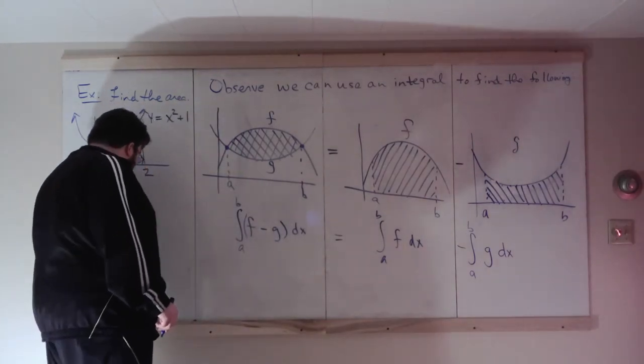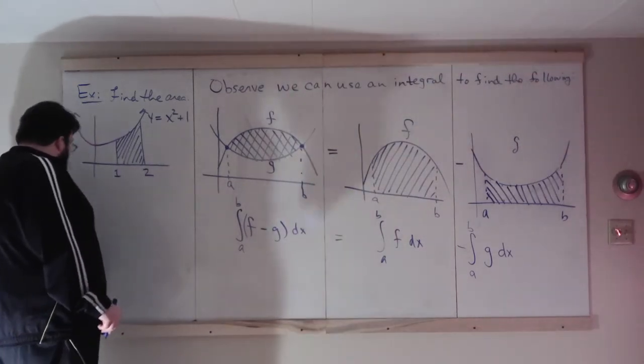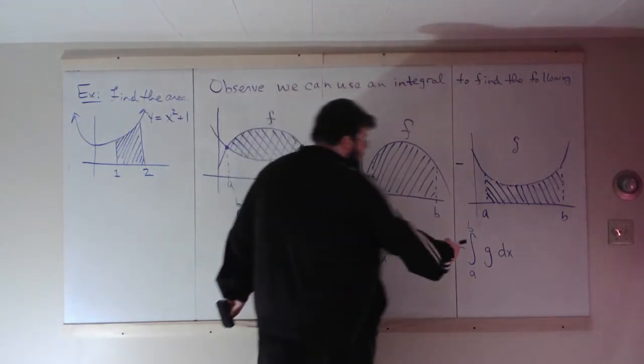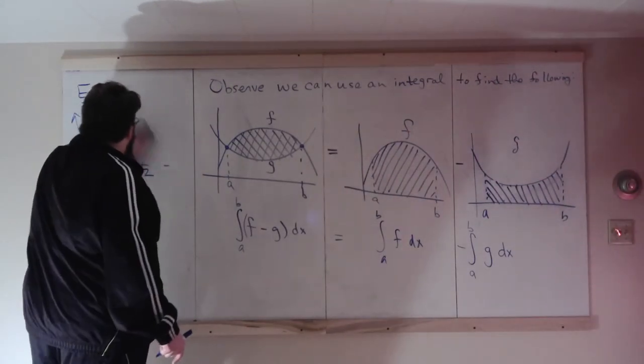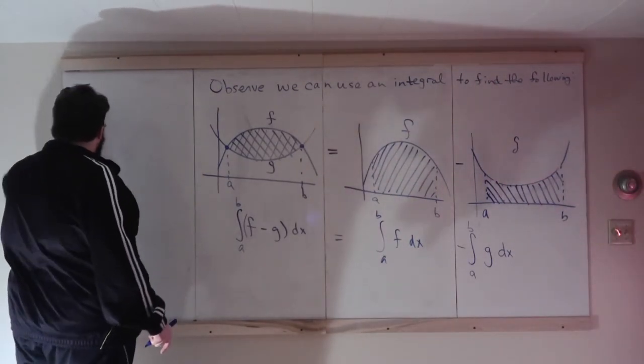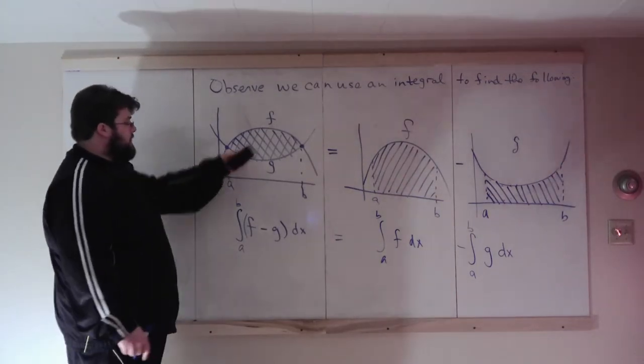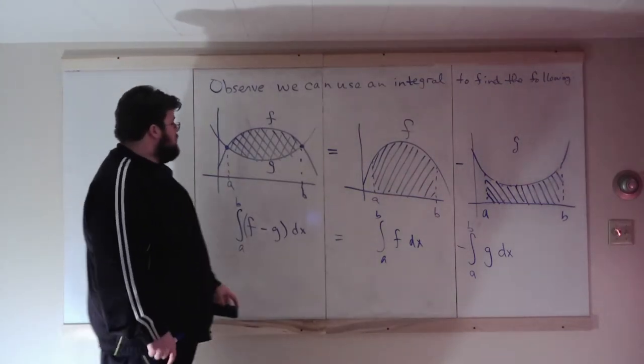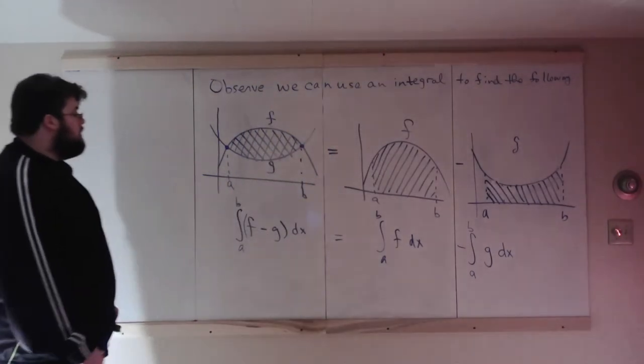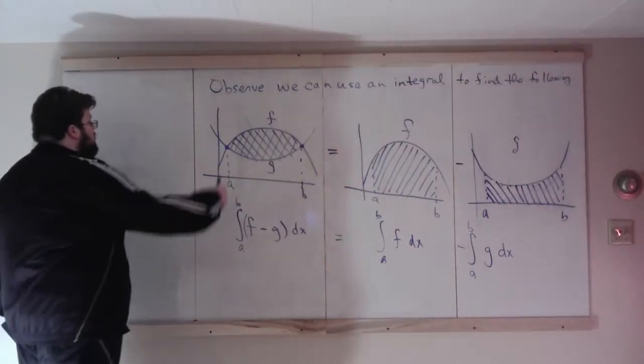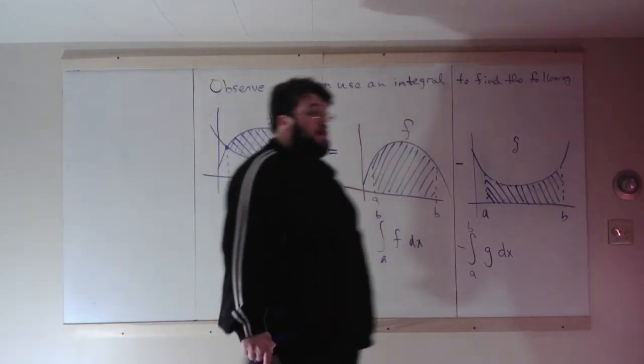Since the bounds and variables are all the same, we can combine these using the properties of definite integrals. From this observation, the area between two curves is given by the integral of the top curve minus the bottom curve on the interval you're considering.